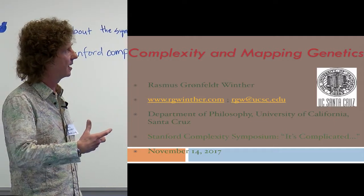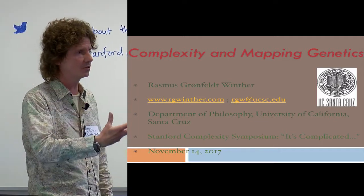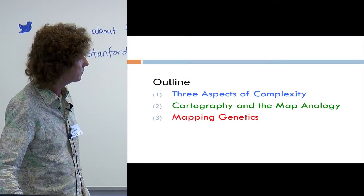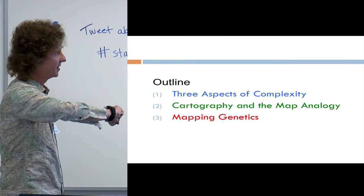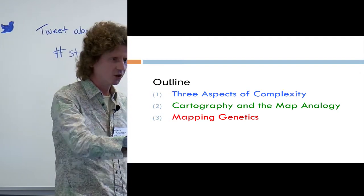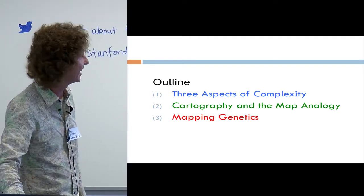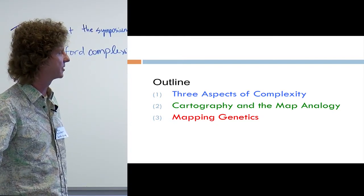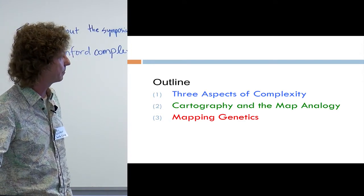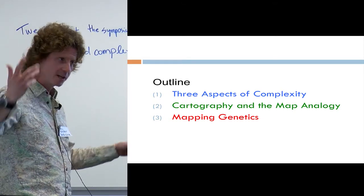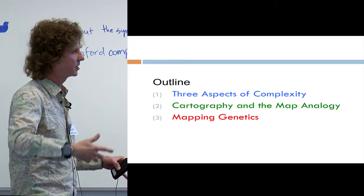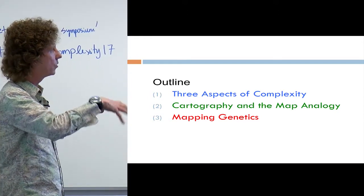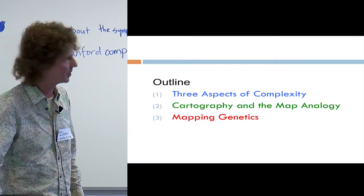I thought it was very interesting to tie the theme of complexity to one of the chapters in my book called Mapping Genetics. The outline is three parts: three aspects of complexity, cartography and the map analogy — which is a general presentation of my project in the book — and then the last part will be specifically on chapter seven, giving you an idea of what I mean by mapping genetics.